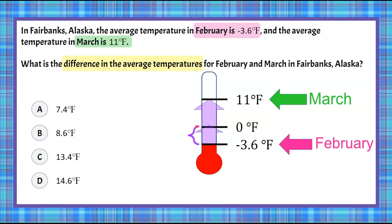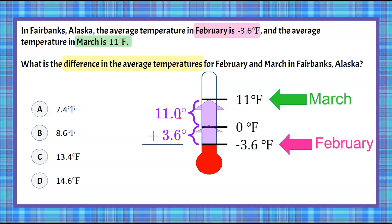Between zero and negative 3.6 is 3.6 degrees, and between 0 and 11 is 11 degrees. To find the difference between these two, we add them together. Lining up our decimal points: 11 and 3.6. Zero plus 6 is 6, bring down the decimal point, 1 plus 3 is 4, and then we get 14.6 degrees.